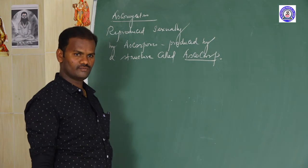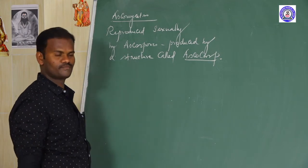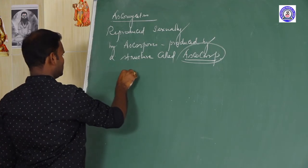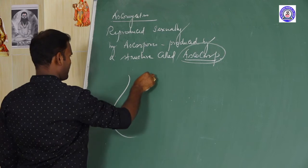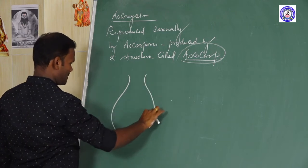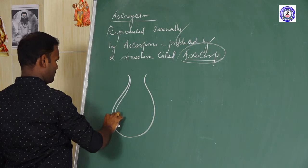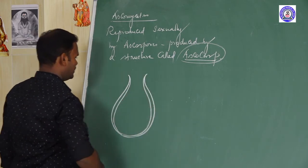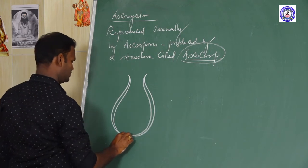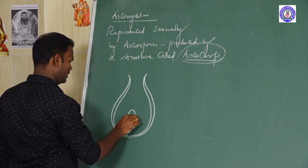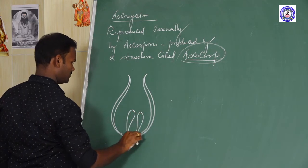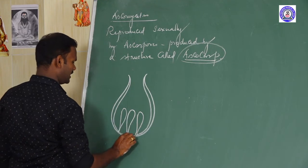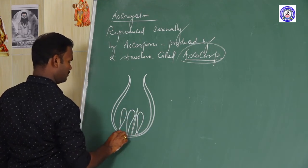There are different structures of the ascocarp: apothecium and perithecium. The ascocarp is a sac-like structure that produces the ascus — a sac-like structure. In between the asci, there is a sterile structure called paraphyses.